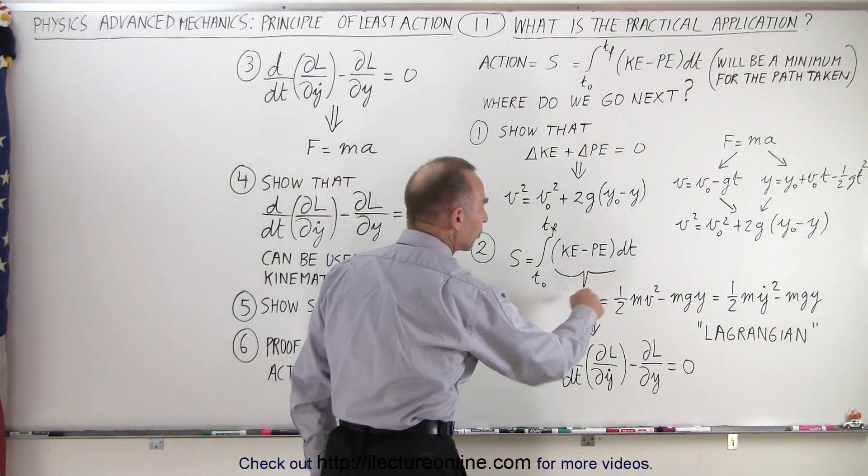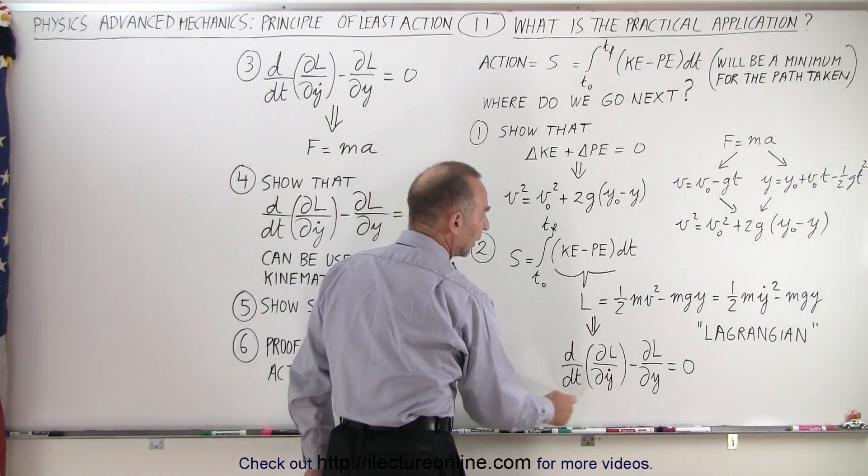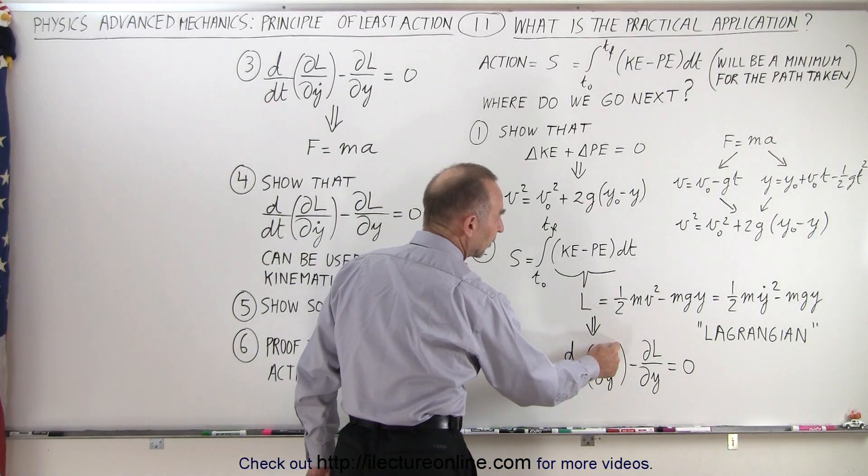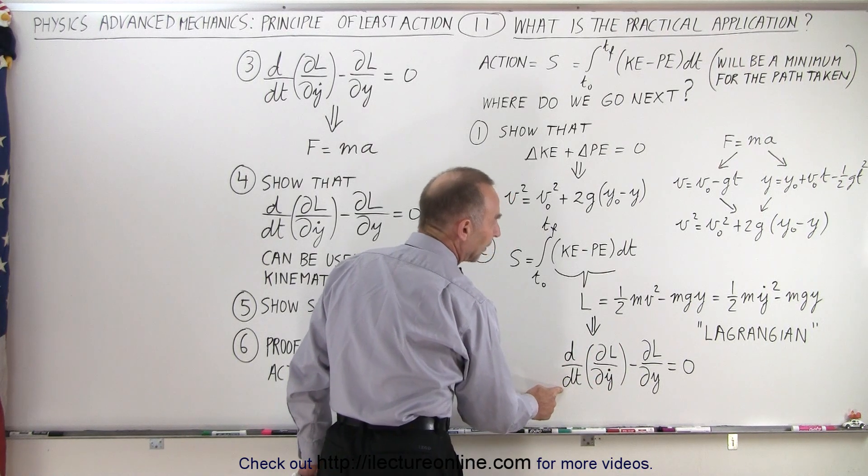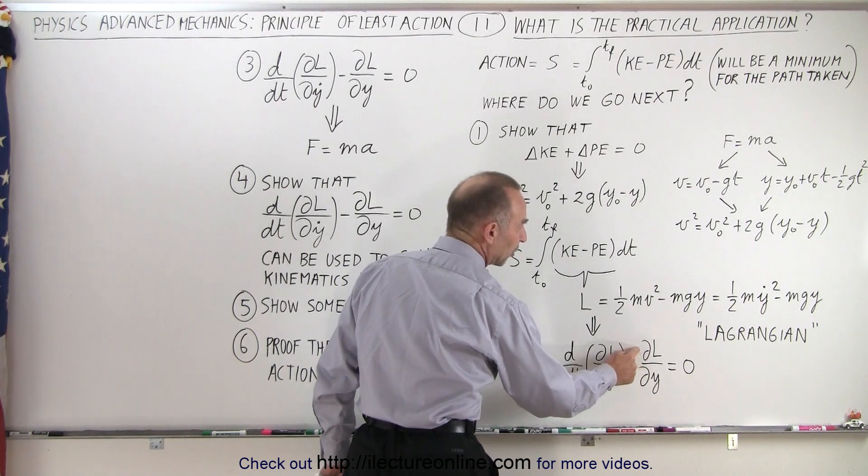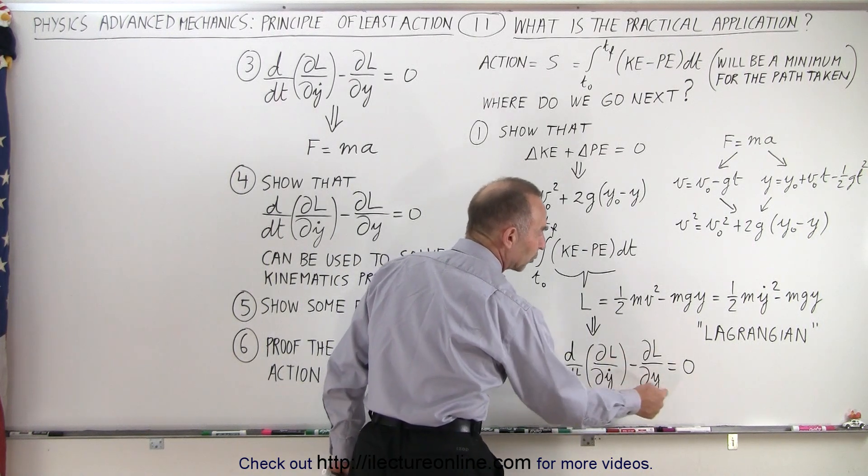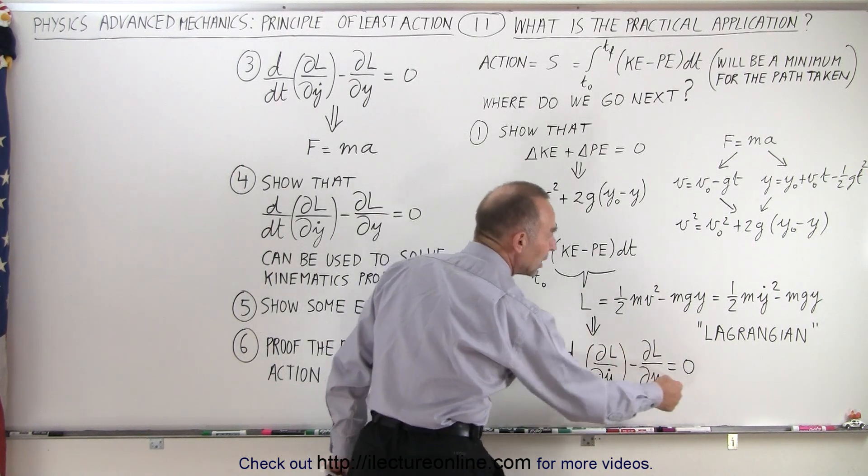So, we call this quantity the Lagrangian, and then we're going to show that if we take the partial derivative of the Lagrangian with respect to velocity, and then we take the derivative of that with respect to time, and subtract from that the partial derivative of the Lagrangian with respect to y, this difference equals zero.